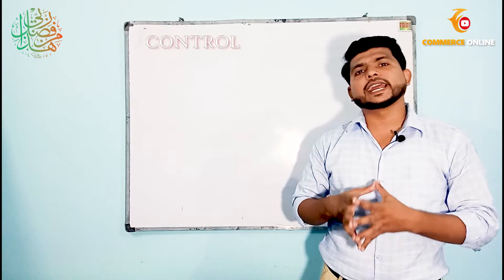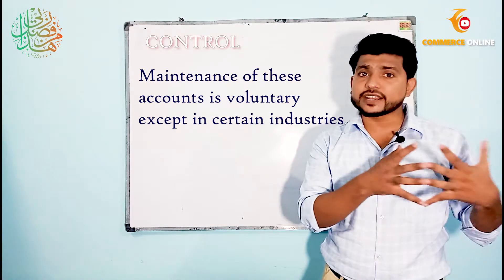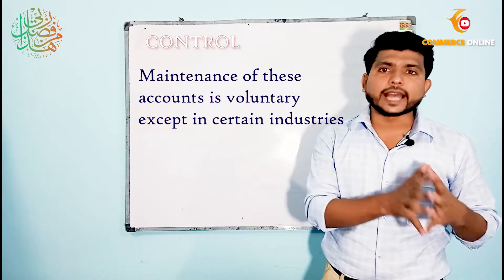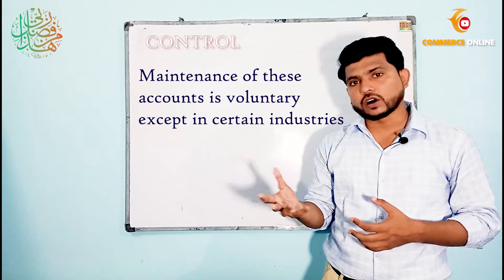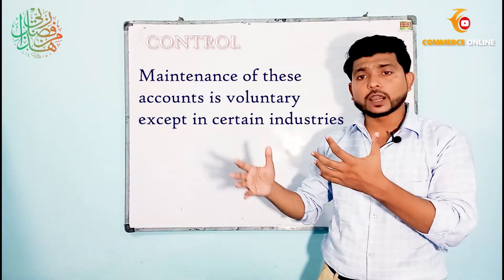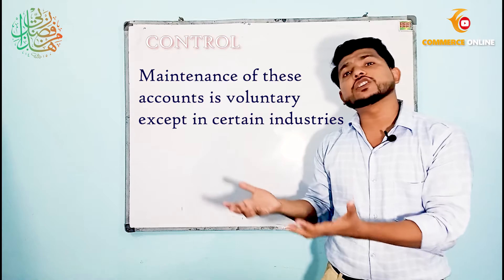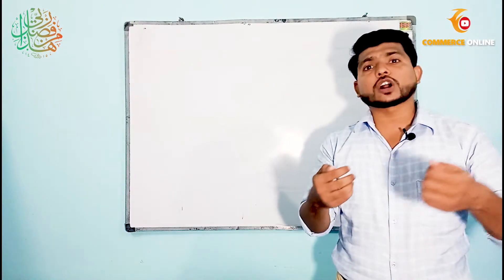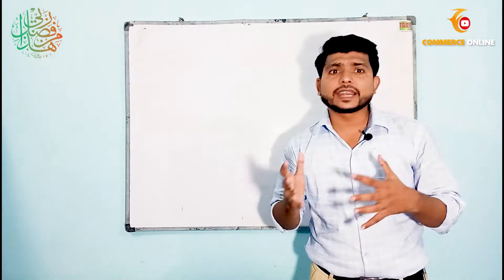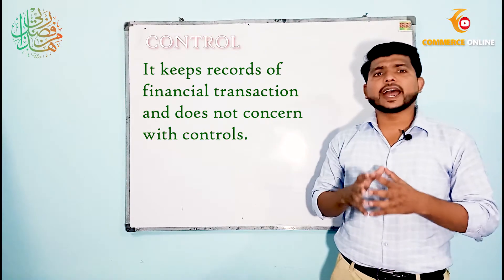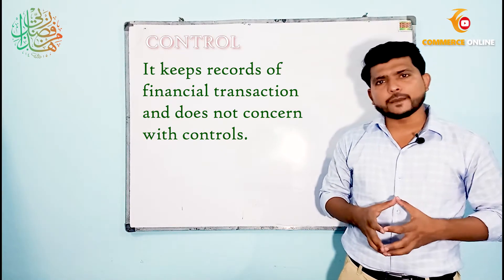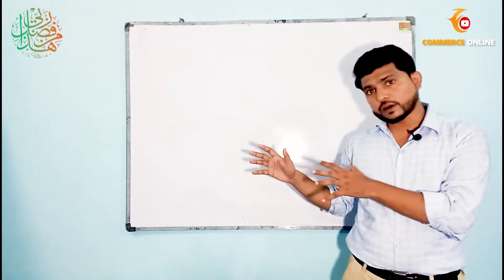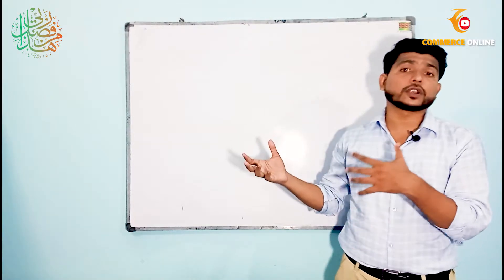When we talk about cost accounting, it is used as a detailed system of controls. It makes use of special techniques like standard costing and budgeting so you can control the activities of an organization and the flow of costs. But when you talk about financial accounting, it keeps records of financial transactions and does not attach any importance to the control aspect — it is mainly concerned with producing output.